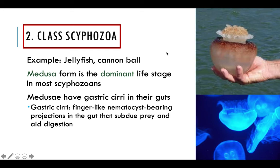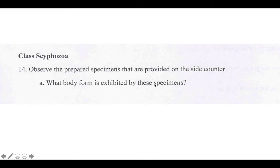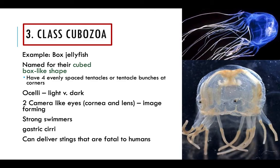Next class is Scyphozoa — these are our cannonball jellyfish, the jellyfish we typically see. Medusa is going to be the dominant life stage form in scyphozoans, so you will pretty much only see them in this free-floating stage. They have what are called gastric cirri in their guts — these are finger-like nematocyst-bearing projections that are used for self-defense and digesting food. In your lab exercises, it just asks what body form they primarily exhibit — and that's going to be medusa body form.